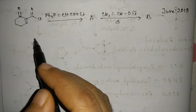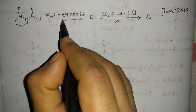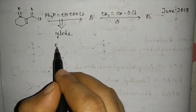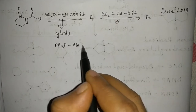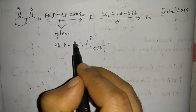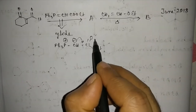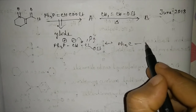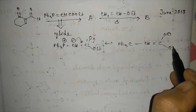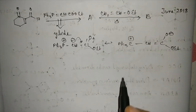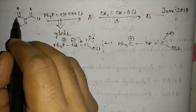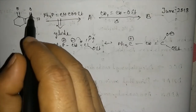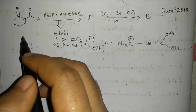Here you can see that this is a ylide, and a COOEt group is there — it is Ph₃P=CH-COOEt. Here it can go for stabilization, and so this COOEt group makes this a stabilized ylide. We can see here that there is a carbonyl group — here is a keto group and here is an aldehyde group. For reaction with a ylide, an aldehyde group gives an alkene. This is known as the Wittig reaction.